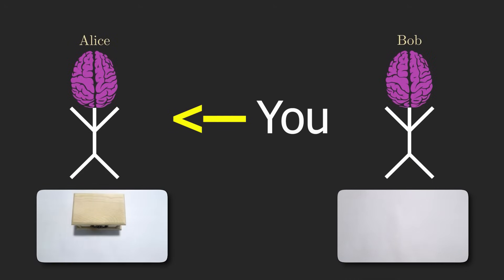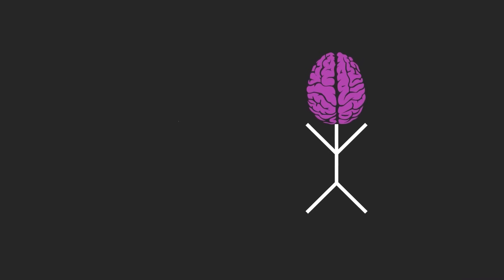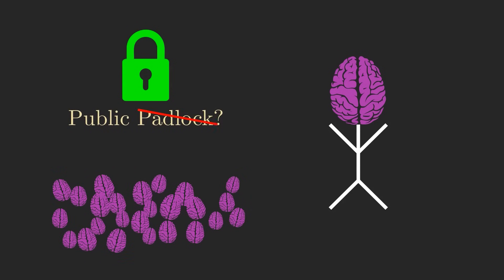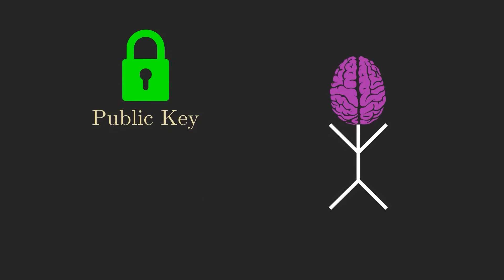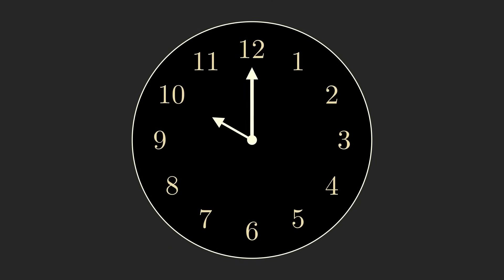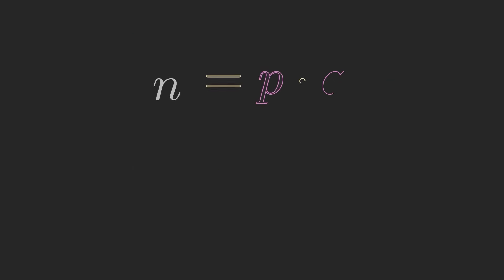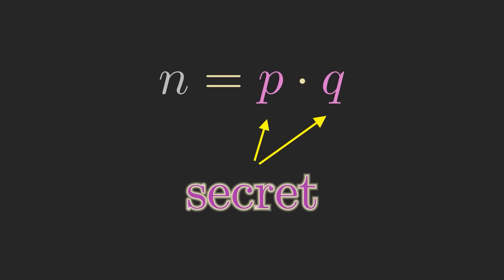For our purposes, you the viewers are playing the role of Alice from earlier, and I am playing the role of Bob. The first step was for Bob, or me in this case, to create the public padlock and broadcast it to the public. This is known as the public key. The public key actually comes in two parts. The first part is a number N called the public modulus. Just like we were working in mod 12 for the example with the clock, here we'll be working in mod N. N is the product of exactly two very large prime numbers, P and Q, but only I know the values of P and Q — remember that, it'll be important in a moment.